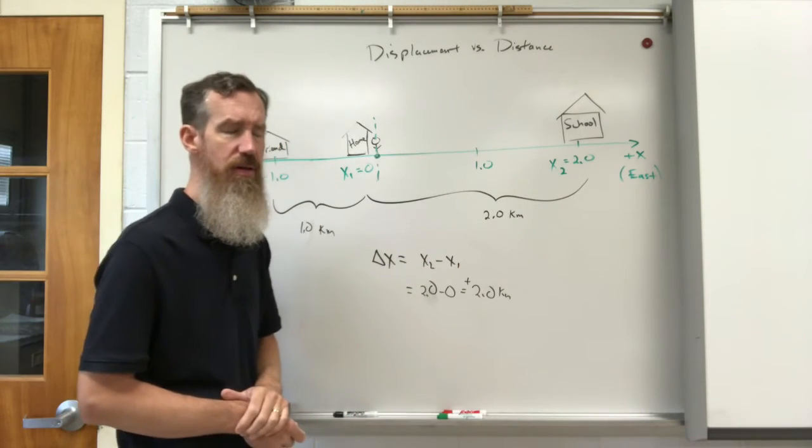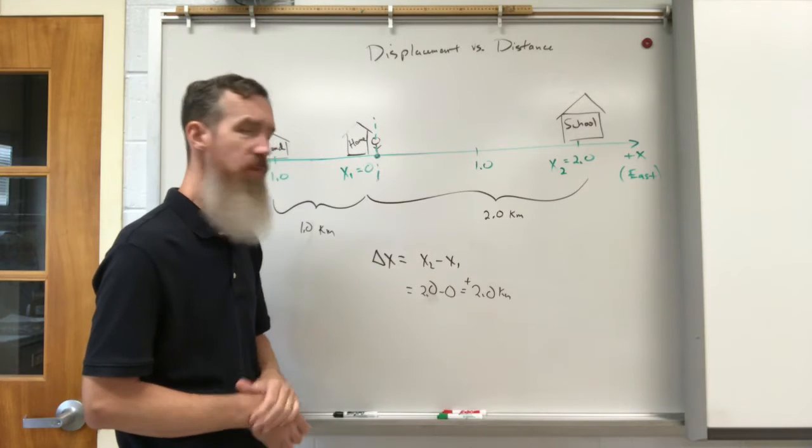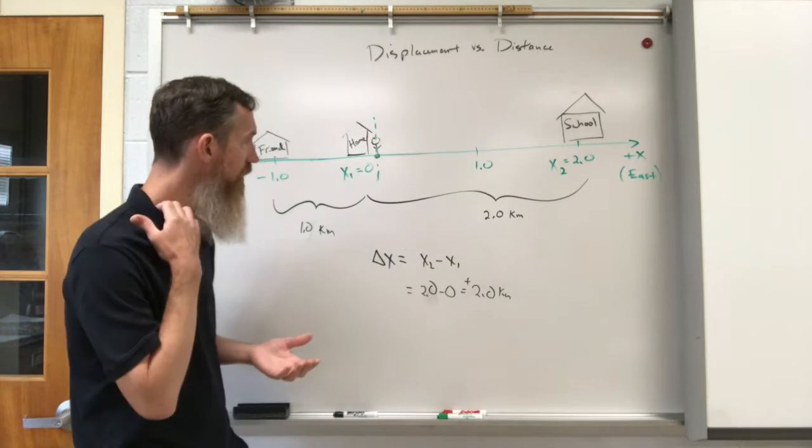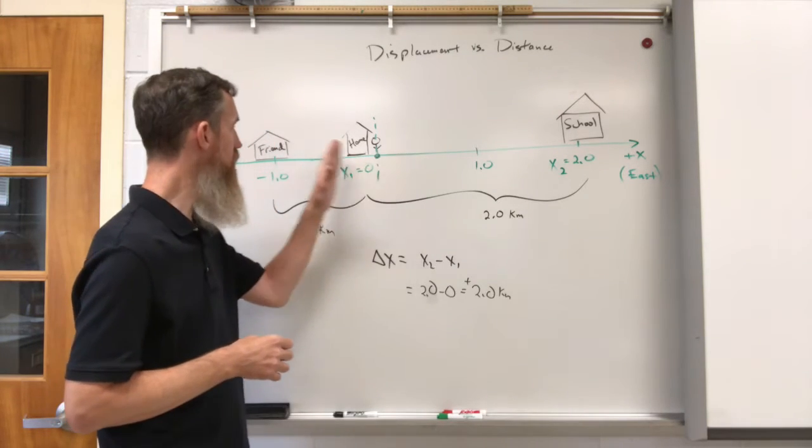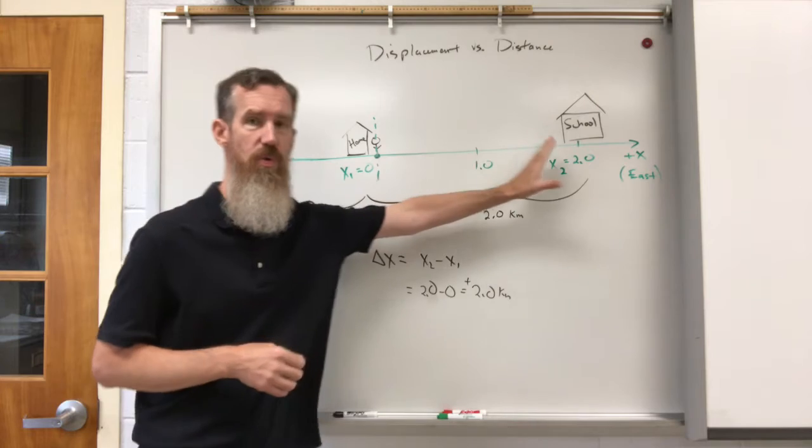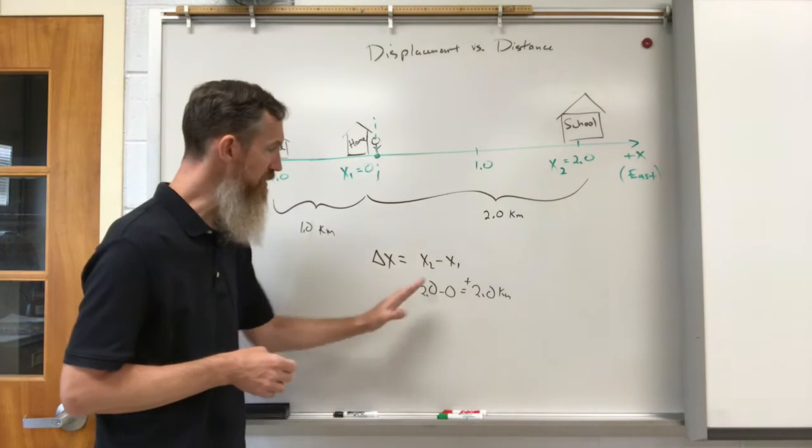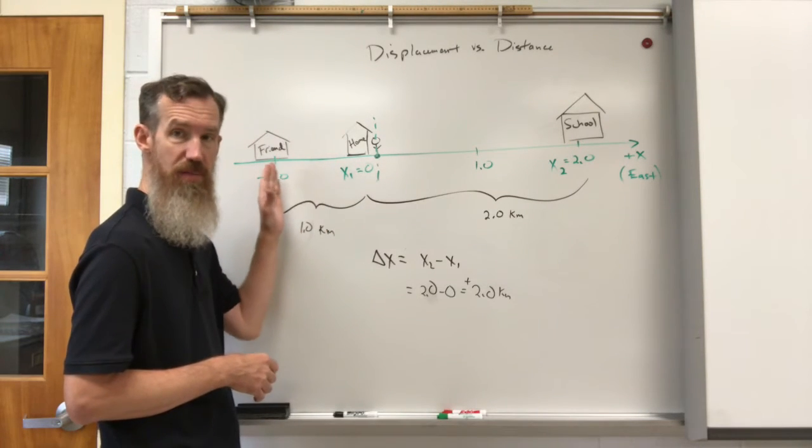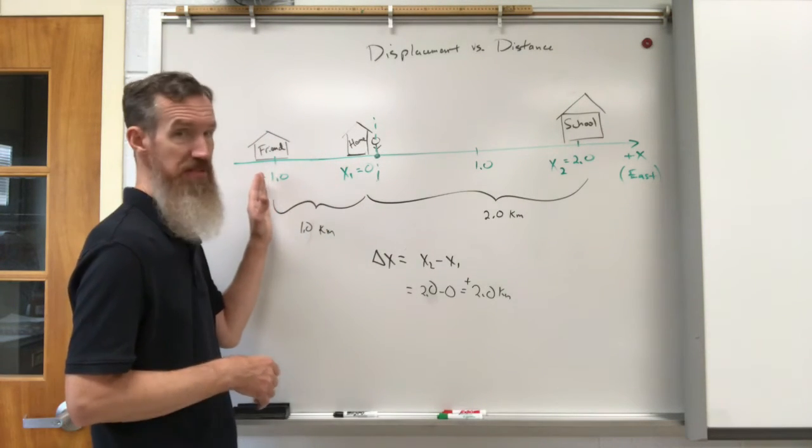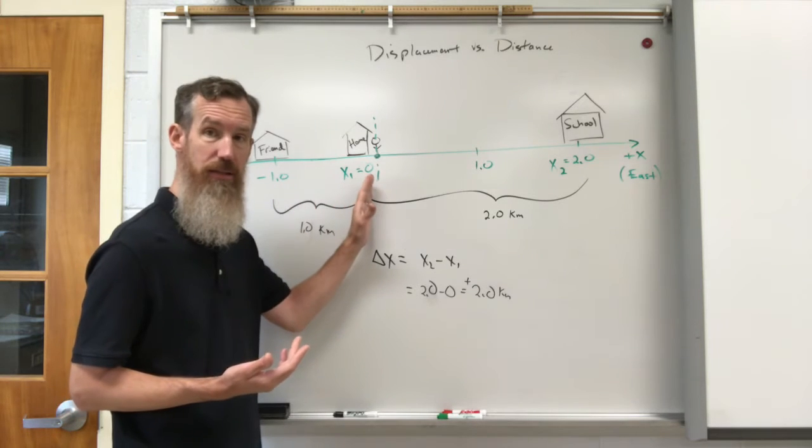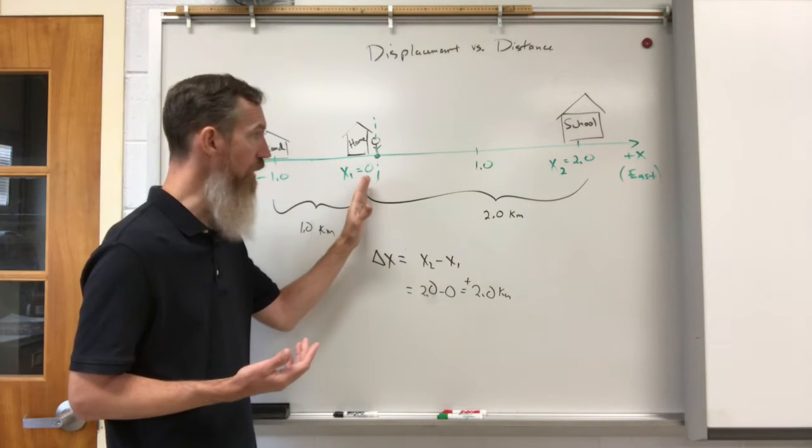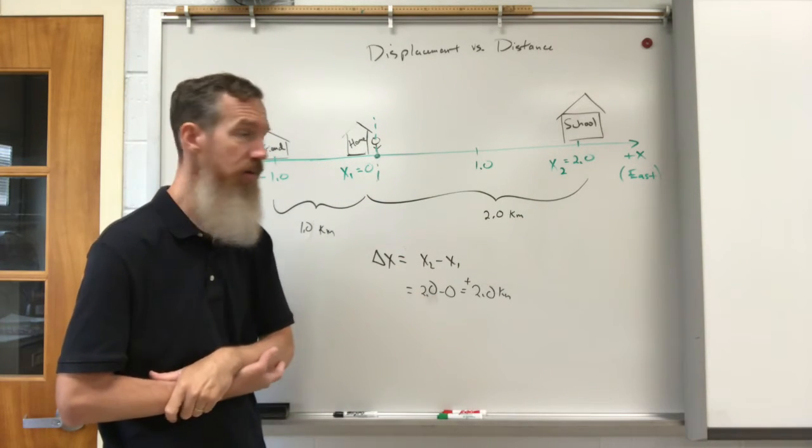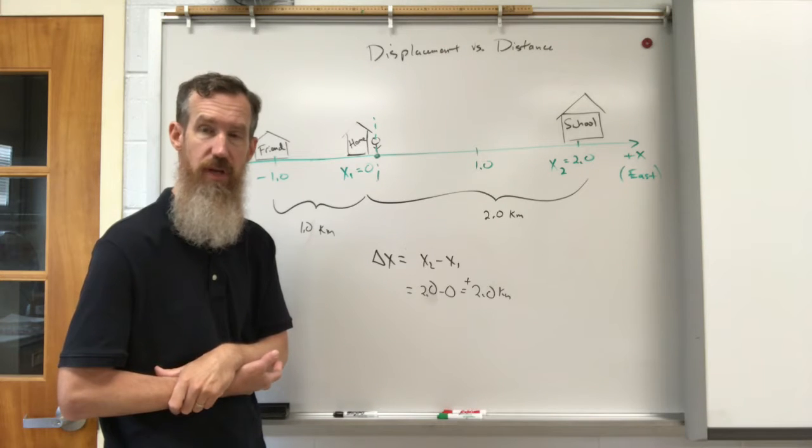What is different here though is distance traveled. You went from home to your friend's house to school. The displacement is positive 2 from there to there. The distance is, well, I walked a kilometer, it doesn't matter about direction. I walked another kilometer back, total of two. I walked two more. So the distance traveled during this trip is four kilometers. So be careful.